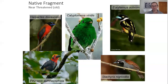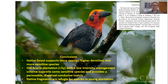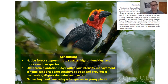Maintaining these fragments is very important in these production landscapes, and they can be even more effective when maintained strategically. Native forest supports more species at higher densities. Old Acacia is actually pretty good at supporting species when it's not intensively managed. Native fragments are particularly important in young plantations — you need an adequate number of them to sustain populations while the Acacia mangium grows up. I'd like to thank all of my collaborators for their help on this project, and thank you very much for your time.